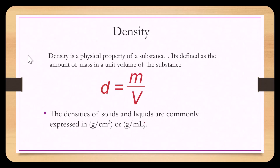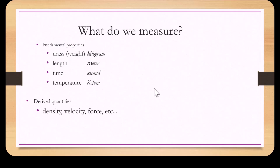Density is a physical property of a substance, defined as the amount of mass per unit volume of the substance. The densities of solids and liquids are commonly expressed in grams per cubic centimeter or grams per milliliter. Some of the fundamental properties that chemists measure include mass, length, time, and temperature. Derived quantities of measurement include density, velocity, and force.